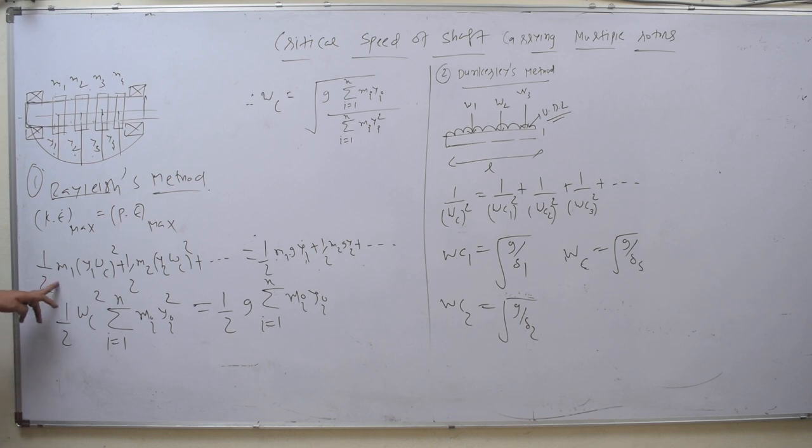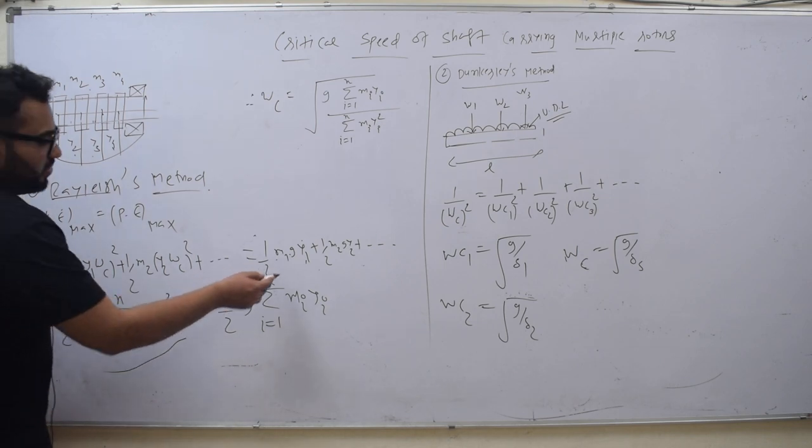So now we will generalize it. We can write it in this way: one half omega C square is coming in all. M1 Y1, M2 Y2, but this is Y1 square. So we generalize it: M1 Y1 whole square, sigma i equals 1 to n. In this way we will generalize it.